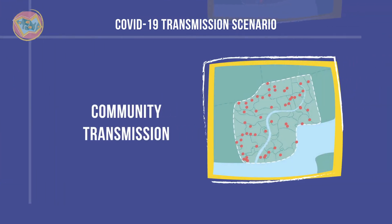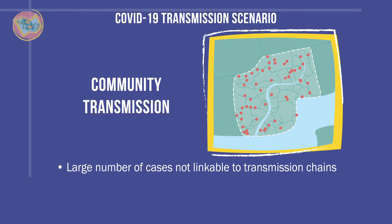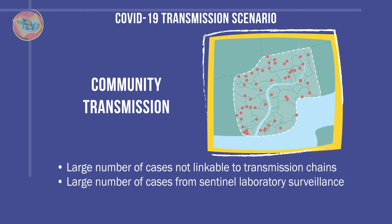And community transmission, or widespread transmission, where a country, area, or territory experiences larger outbreaks of local transmission, defined through an assessment of factors including but not limited to large numbers of cases not linkable to transmission chains, large numbers of cases from sentinel laboratory surveillance, and or multiple unrelated clusters in several areas of the country, area, or territory.